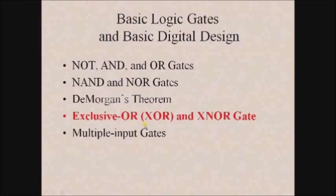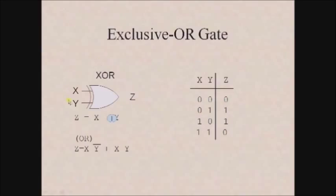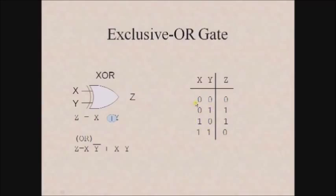Now let us see the XOR gate, also known as the exclusive OR gate. It accepts more than one input and provides only one output. For a two-input XOR gate, x and y are inputs and z is the output. The output expression is z equals x XOR y, which can also be written as z equals x·y complement plus x bar·y. The truth table shows: if all inputs are 0 or if all inputs are the same, the output is 0; if any one input differs from the other, the output becomes 1.